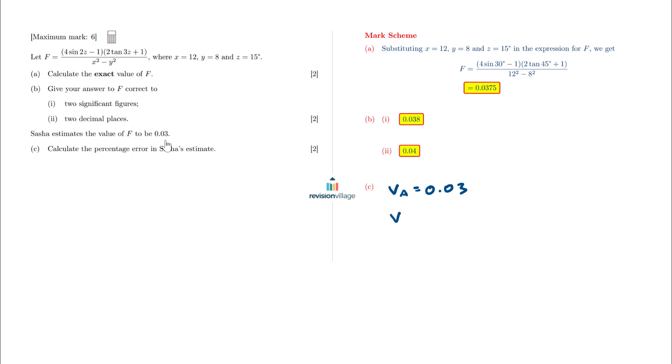My exact value, I found that back in part A. The exact value of F is 0.0375. Now that I have that, I can apply the percentage error formula to find the percentage error of Sasha's estimate. Let's go ahead and do that.